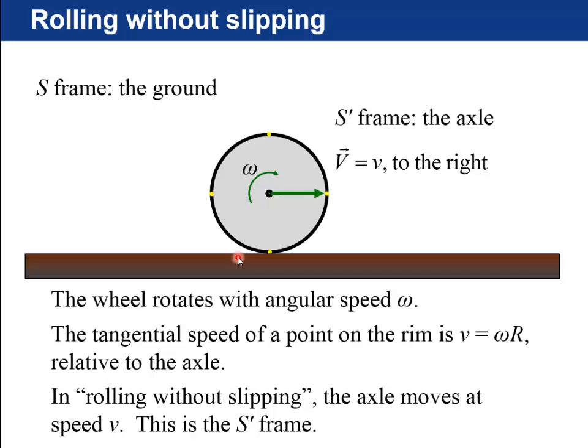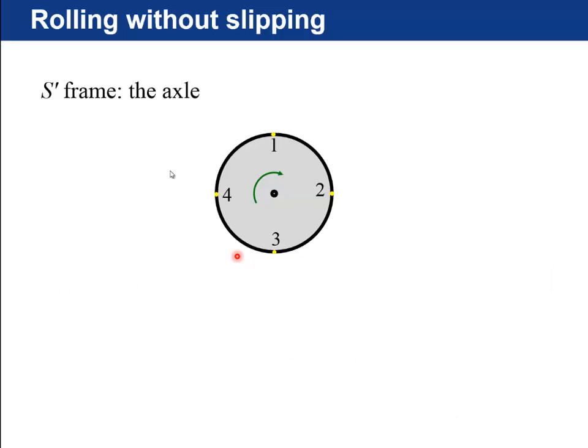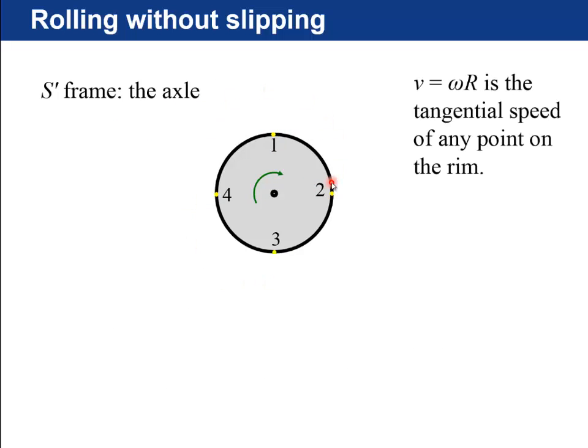So we're going to look at this S prime frame, which is the axle frame of reference, and look at these four points. What's happening is that it's very simple. At each point, each point is moving at a tangential velocity, which is omega times r.